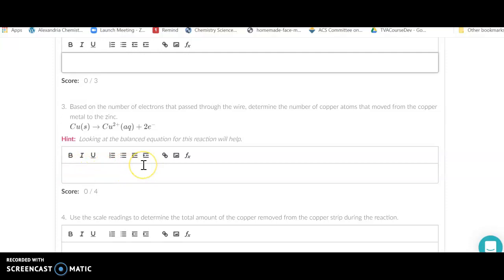You're going to get right down here the number of copper atoms. So again, if you get your number of electrons and you realize that there is one copper atom for every two electrons, you can figure out how many copper atoms you have.